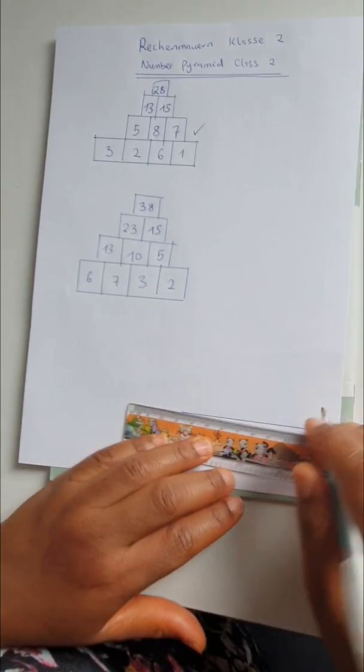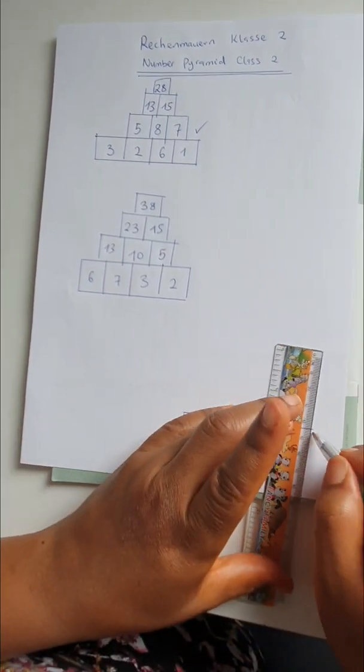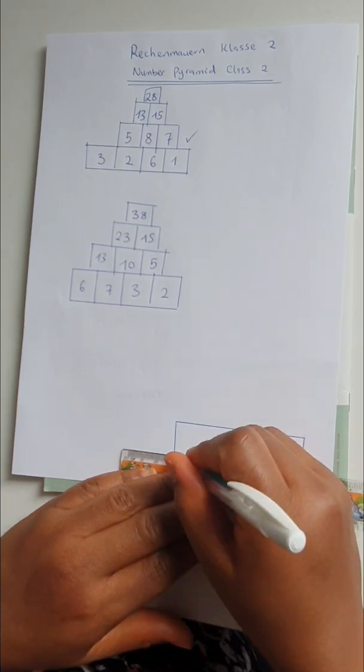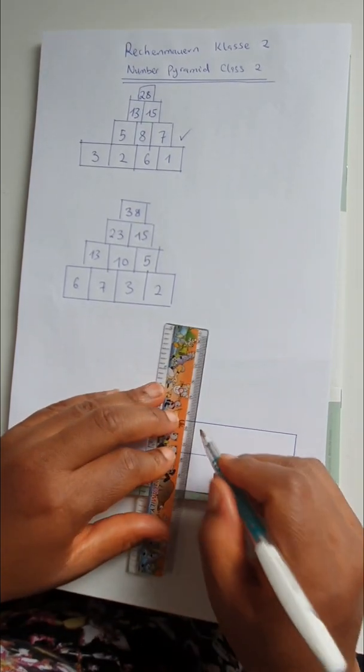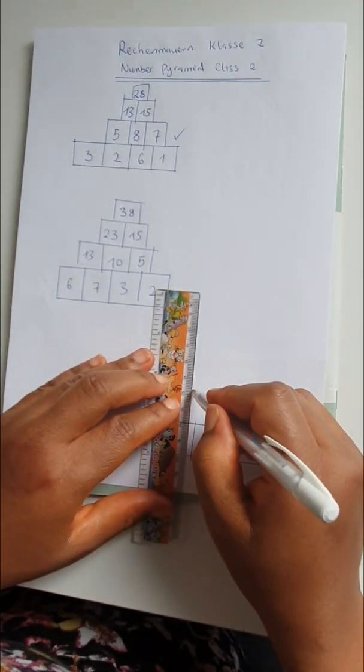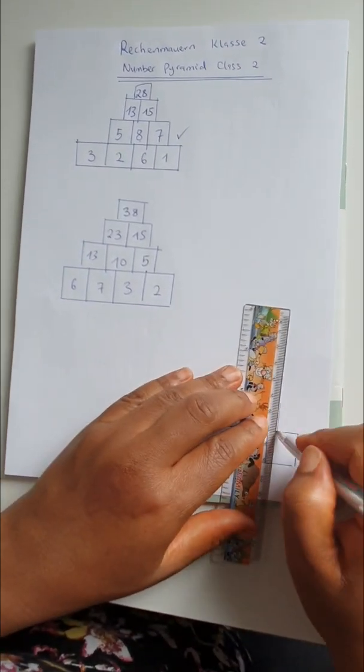So I think we should do it one more time so that you really understand it. Now the last one, four spaces again down here, one, two, three, and four. Three up here.